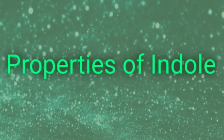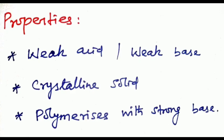Next topic, properties of indole. Indole, like pyrrole, is a weak base and weak acid. It is a crystalline solid with melting point 52 degrees celsius. With strong base, we get polymer.